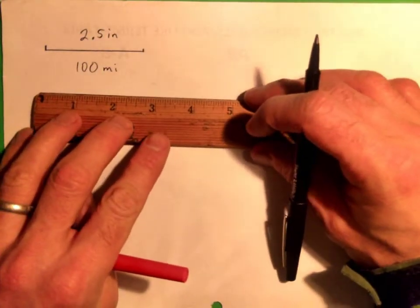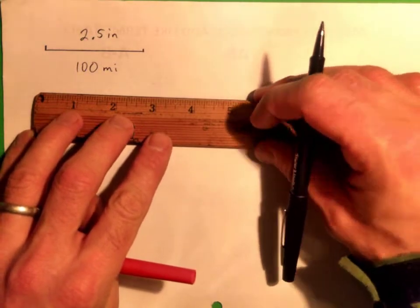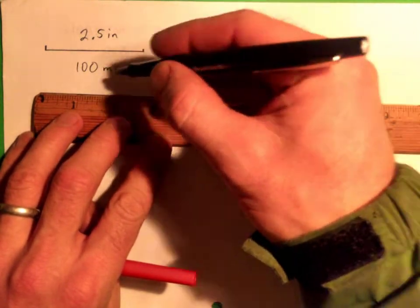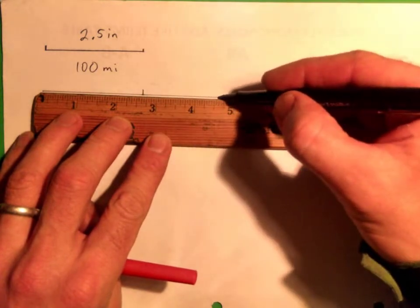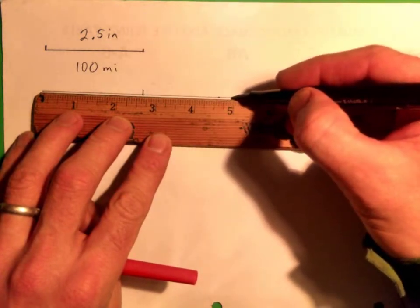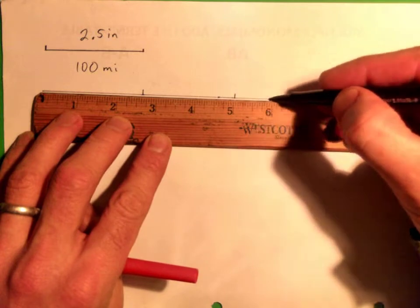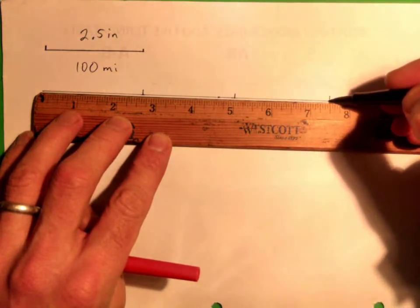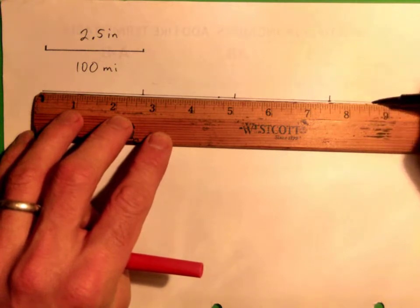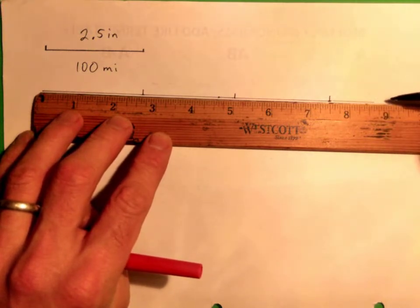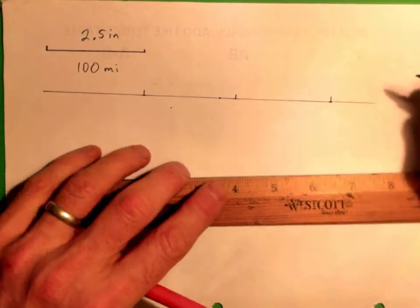And what we want to know is, so 350 miles then would be how many inches? So it looked like something like there's one, another, two, 350. So half of that again, I'm just going to guess somewhere around there.